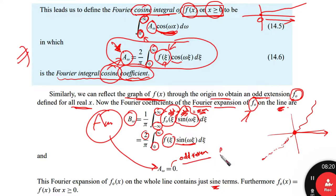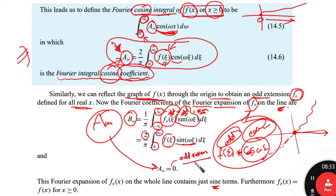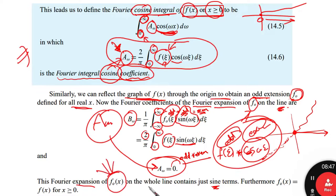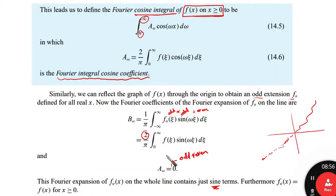There is no need to calculate a(ω) in the odd case, because f_o(z) is odd and cosine is even, so odd times even vanishes. Therefore a(ω) = 0 in this case, and the Fourier expansion of the odd function on the whole line contains only sine terms.